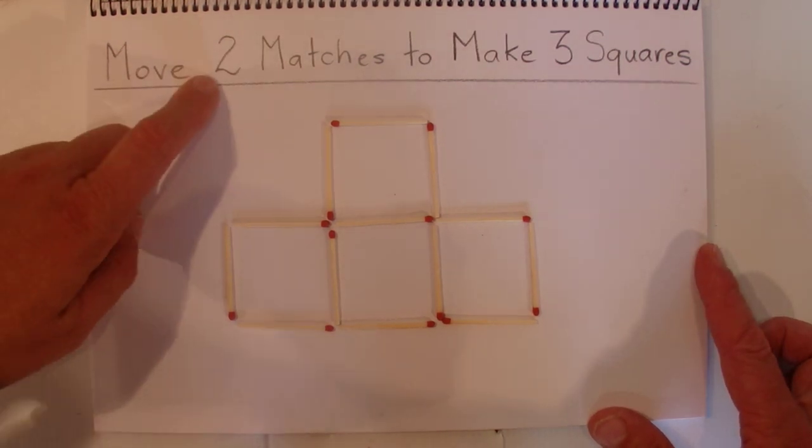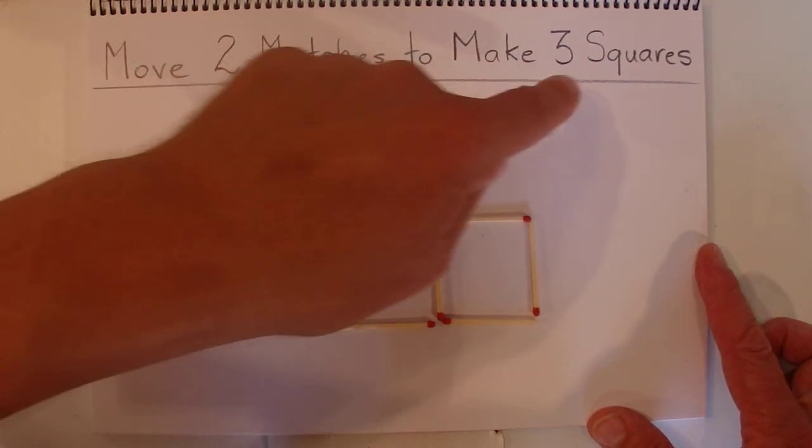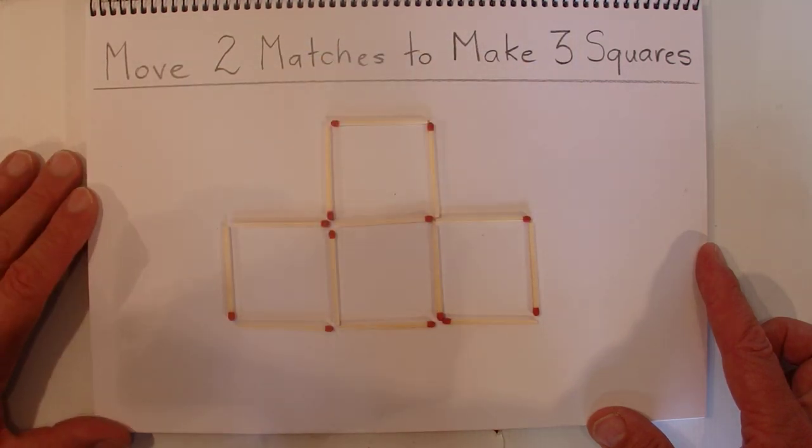What we've got to do with this puzzle is move two matches to make three squares.